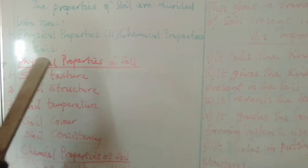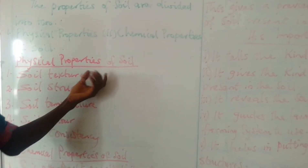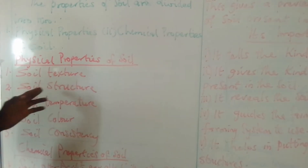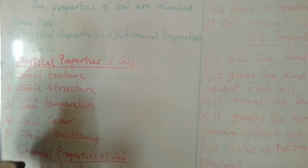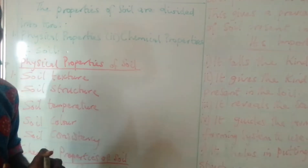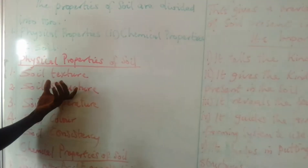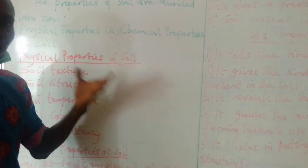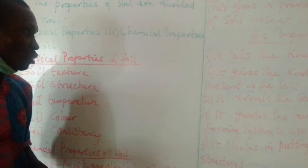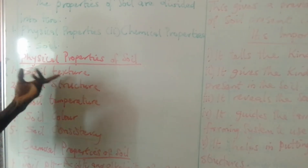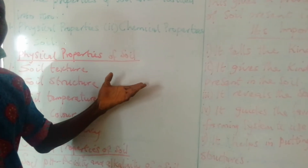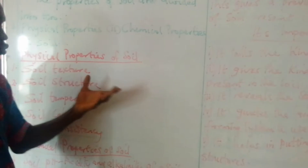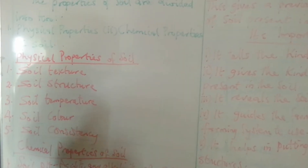Number one, we talk about soil texture — how coarse or fine a soil is. Soil structure refers to the aggregate arrangement of soil particles, how they are arranged. If the soil structure is destroyed, crops cannot do well. And if the soil texture is not fine enough and the pore spaces are too loose, the plant will also not do well.